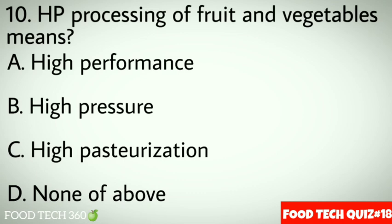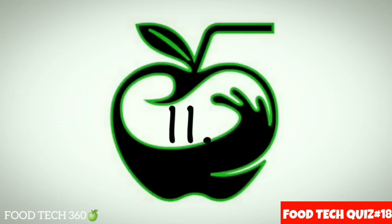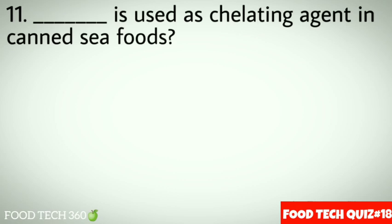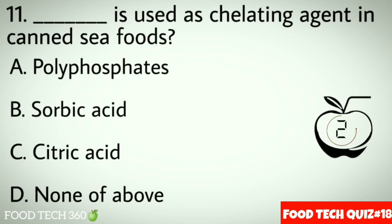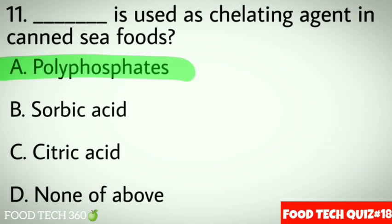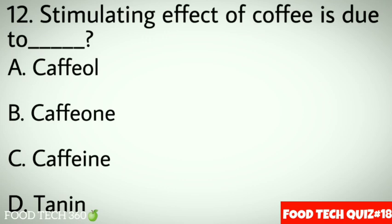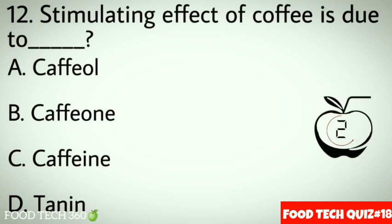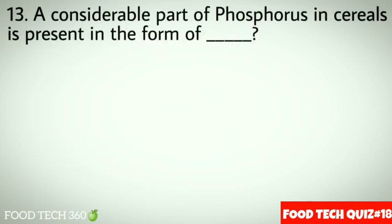Question 9: Commonly used chemical preservative in bakery is dash. Options: A. Benzoate, B. Propanoate, C. Ascorbate, D. Acetic acid. Correct answer: B. Propanoate. Question 10: HP processing of fruits and vegetables means. Options: A. High performance, B. High pressure, C. High pasteurization, D. None of above. Correct answer: B. High pressure. Question 11: Dash is used as chelating agent in canned seafoods. Options: A. Polyphosphates, B. Sorbic acid, C. Citric acid, D. None of above. Correct answer: A. Polyphosphates.